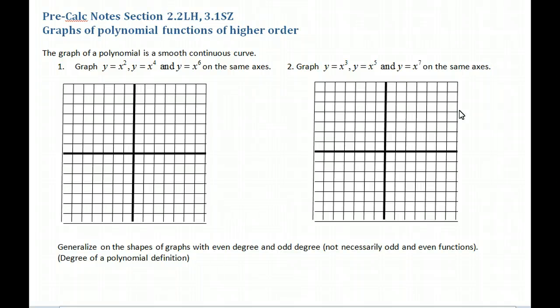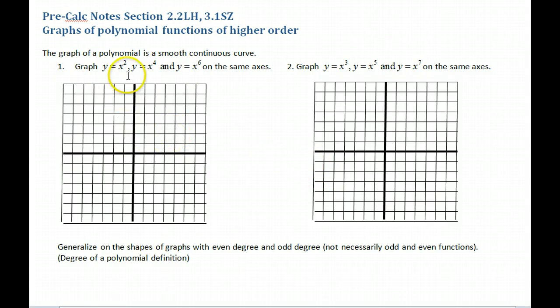We want to look at some general shapes here. You're going to be pretty active — go ahead with your calculator and graph some of these things to see how they look. Do number one and number two, pause this, and we'll come back and summarize.